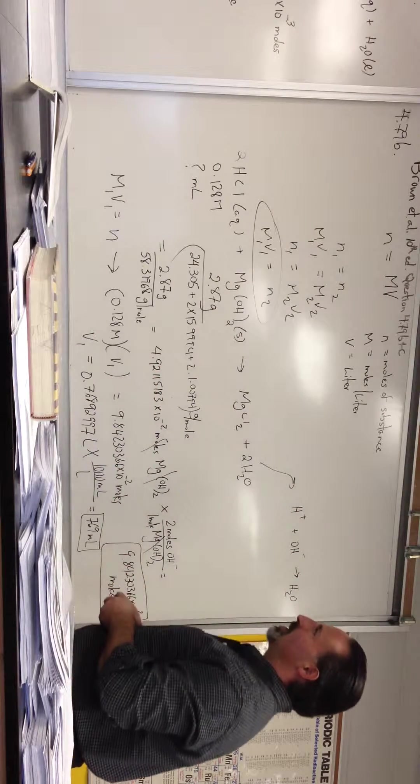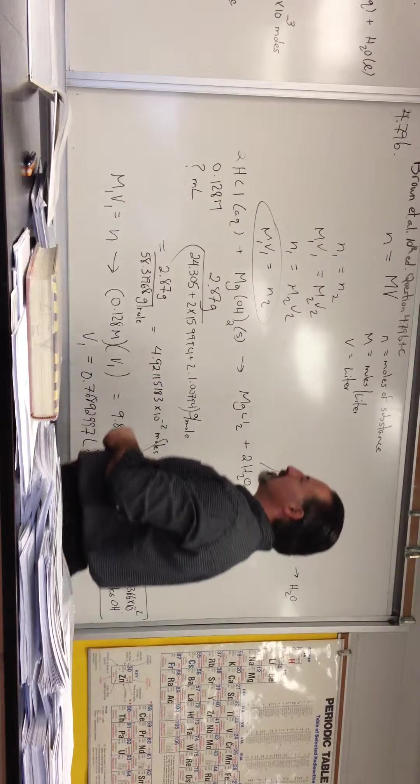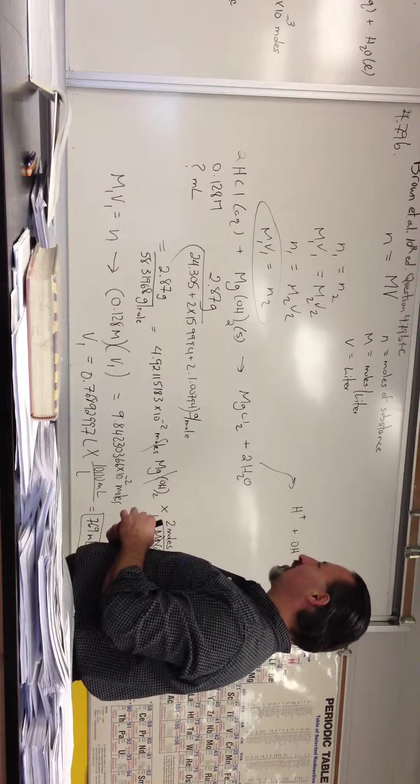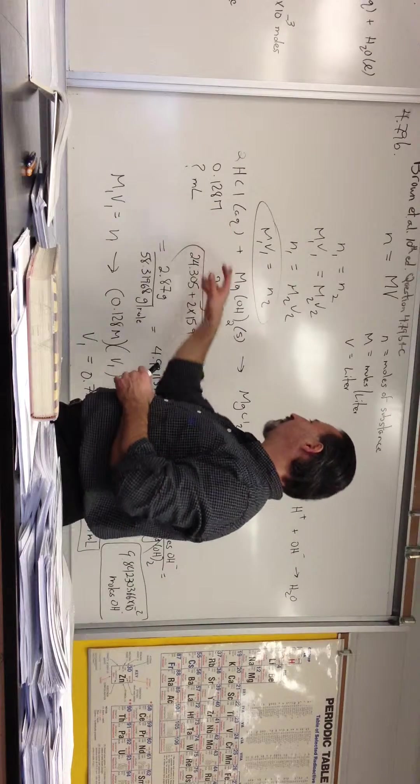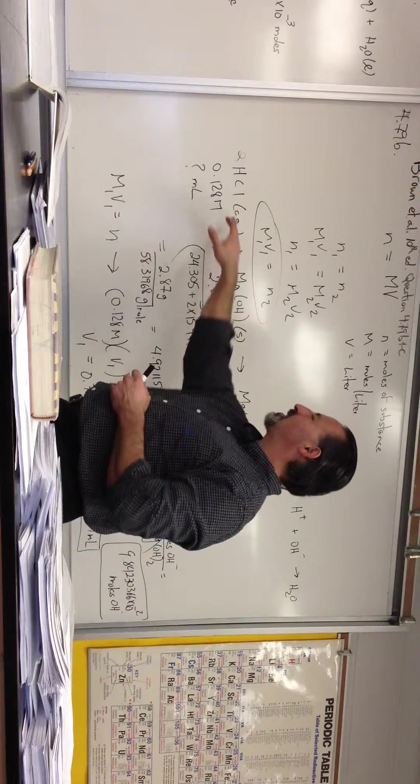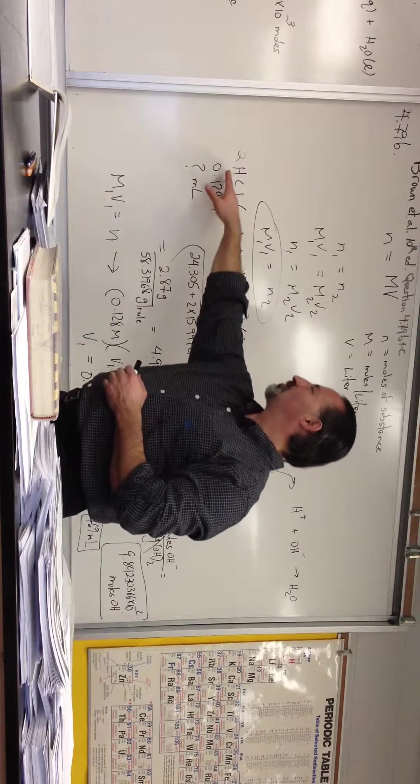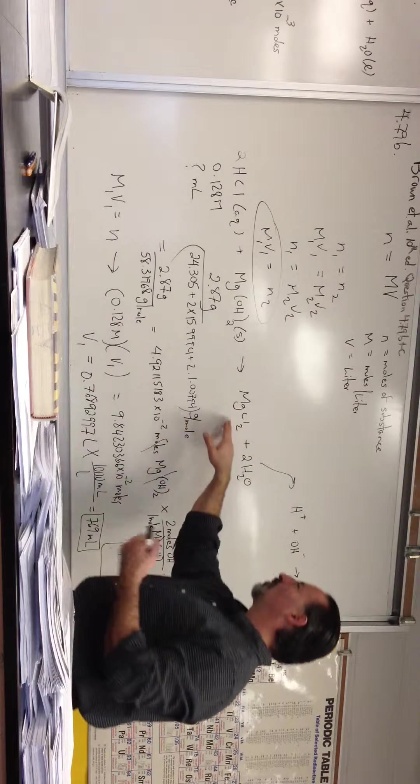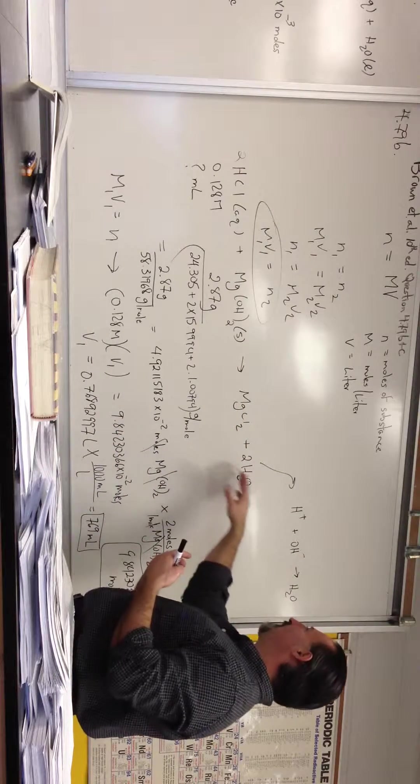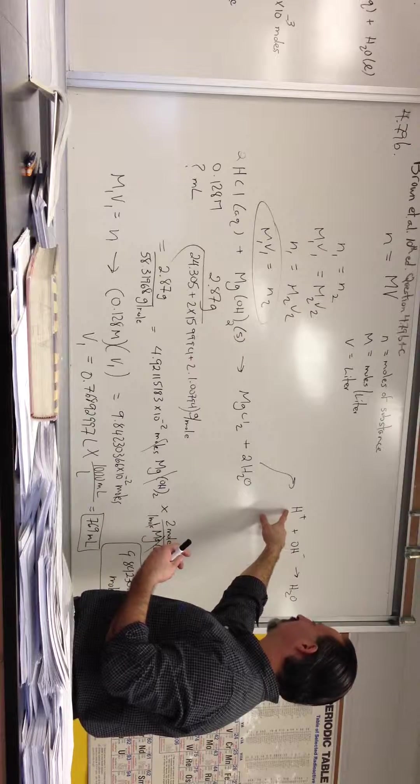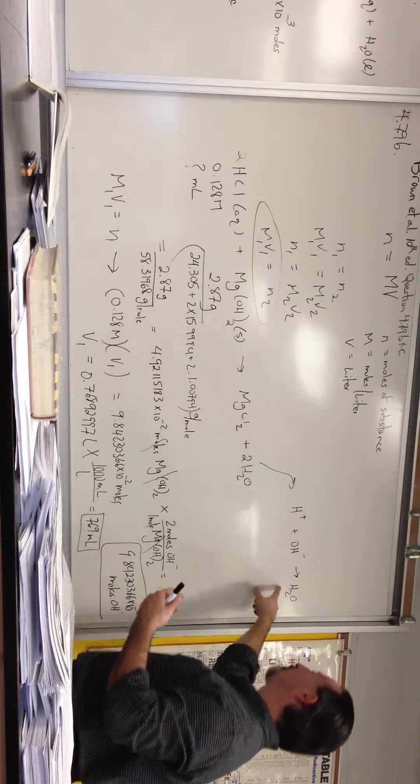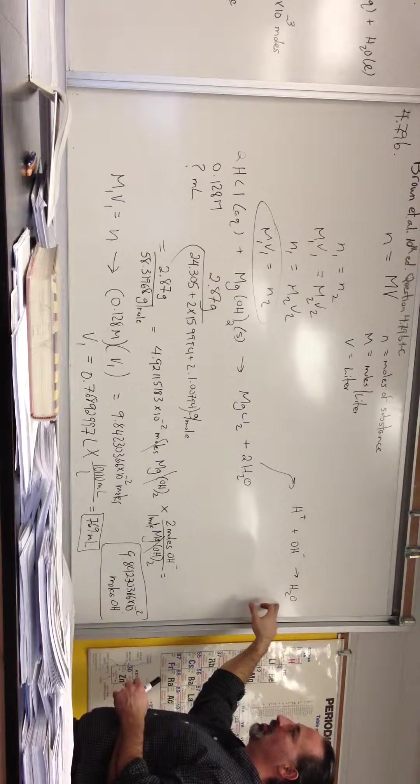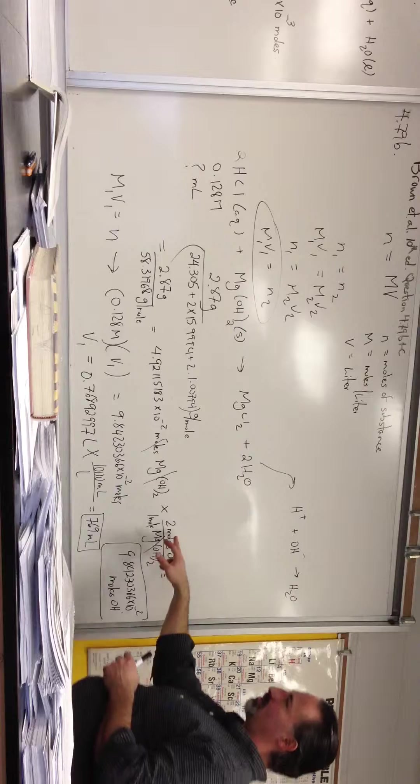In the first problem from our textbook, 479B from Brown and others 10th edition, question B and C of 479, we're titrating hydrochloric acid with a sample of magnesium hydroxide. So we show the chemistry first of all. Two hydrochloric acids titrate one magnesium hydroxide to form magnesium chloride and water. The net ionic equation is H plus combining with OH minus to form water. Any acid-base reaction boils down to this reaction, which will explain why I use this conversion factor here.